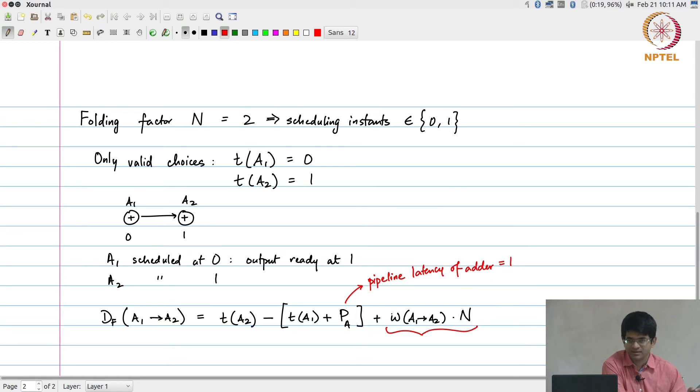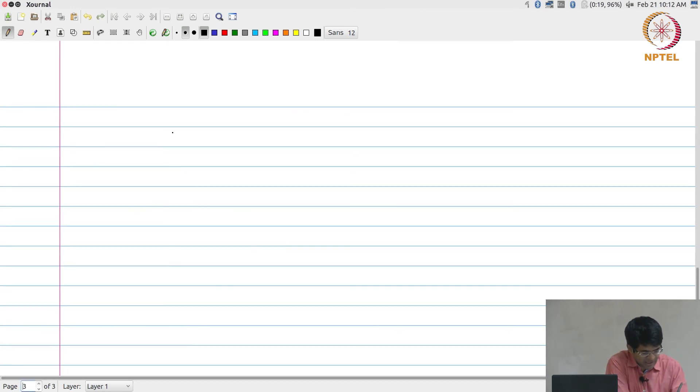The interesting thing is what this allows you to do is t of A2 can now be less than t of A1 if this W is greater than 0. I do not care if t of A2 minus t of A1 plus p_a is negative, because the W might be sufficient to bring it positive. Let us walk through this example and complete it. In this particular case, d_f from A1 to A2 is t of A2, which is 1, minus t of A1, which is 0, plus p_a equal to 1, and the W in this case is 0 times N, which means that d_f is equal to 0.